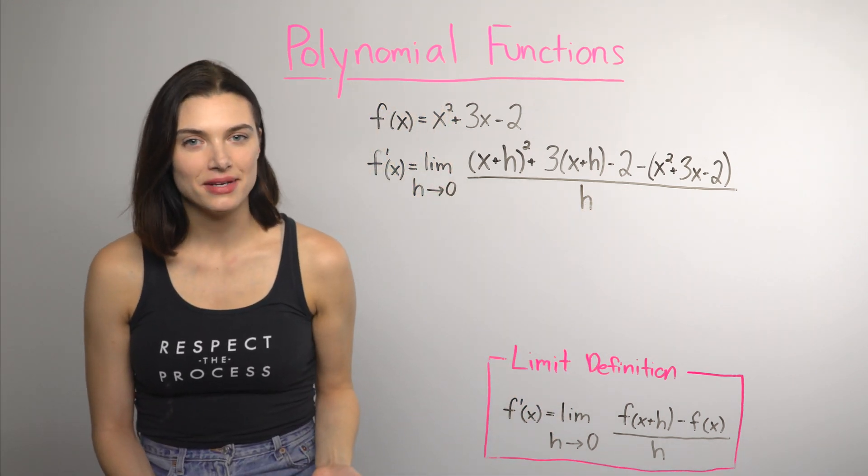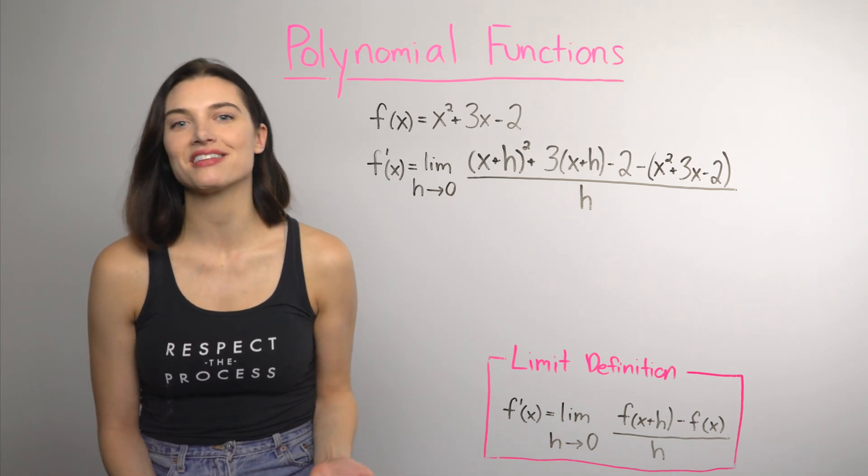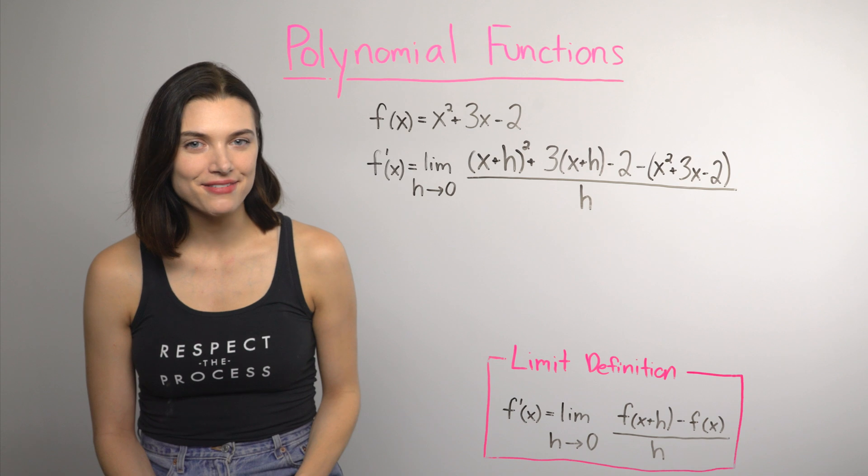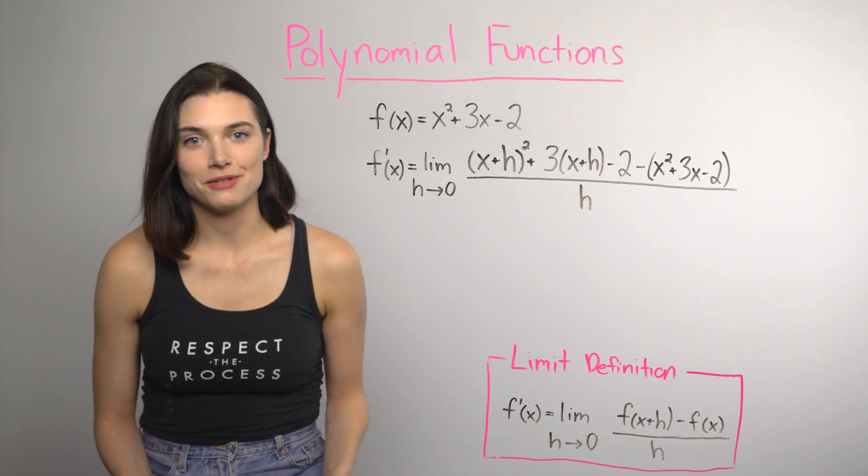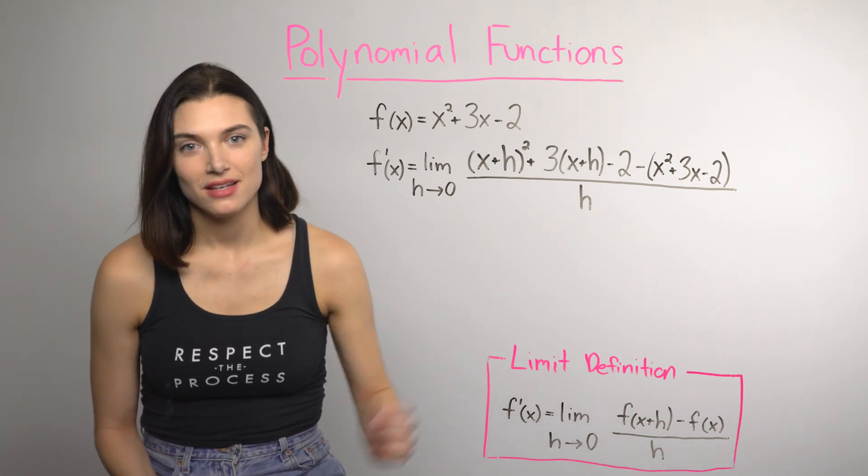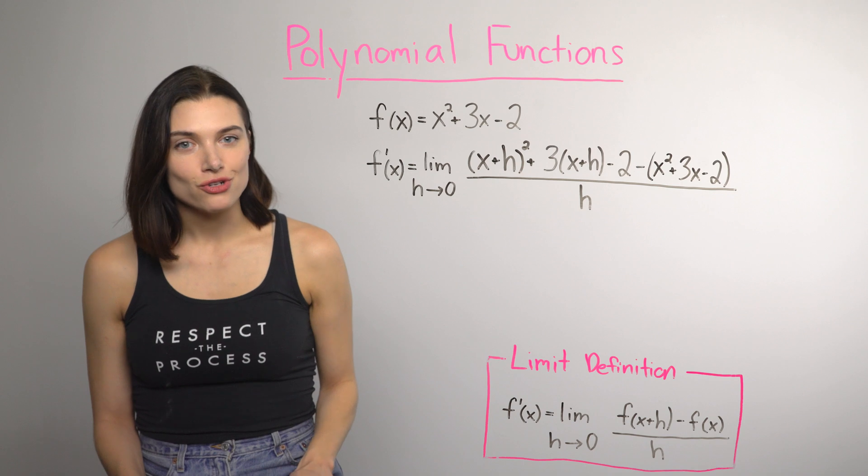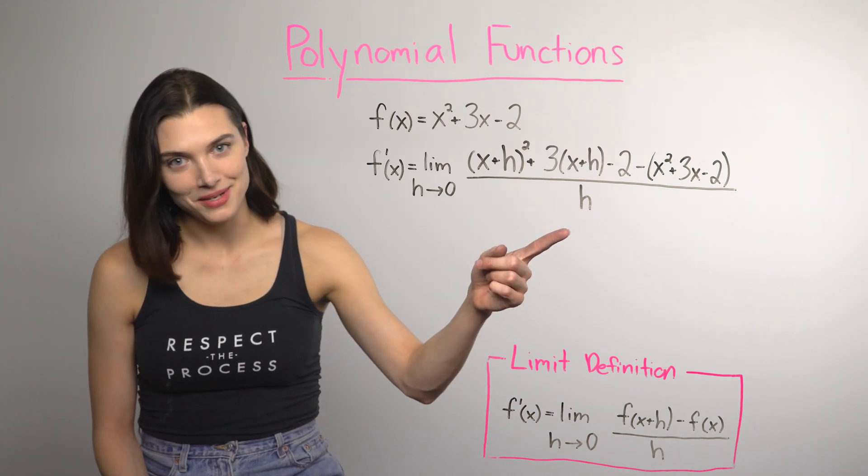So, you may remember from finding limits that if we just plug zero in for h, we're done. We've found the limit. If you're using the definition of the derivative, that's not going to work, because we'll end up dividing by zero when we put a zero in the denominator. So, the next step is to try and simplify and reduce to fix that h in the denominator.